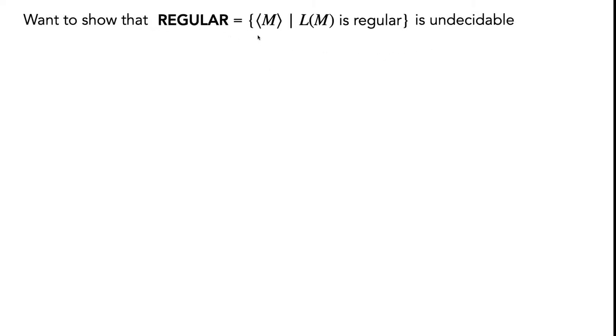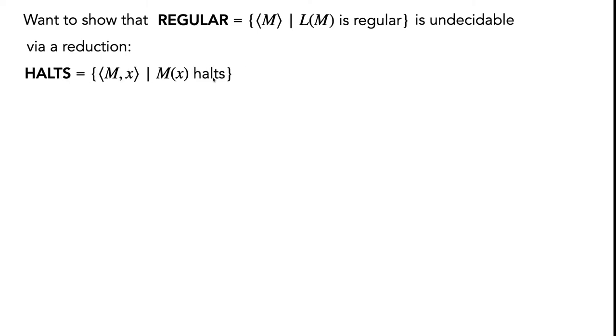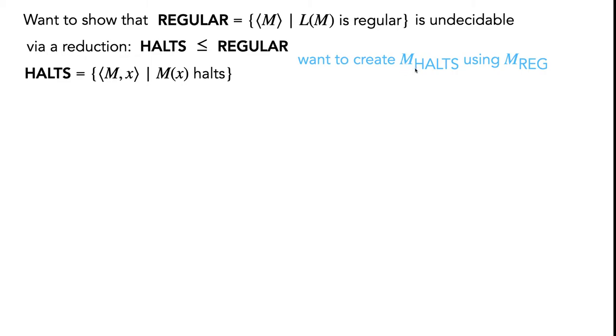The language REGULAR consists of encodings of Turing machines such that the language of that Turing machine is regular. We have to do this via reduction from a language we know to be undecidable to REGULAR. You have a few options from the notes for languages you're allowed to assume are undecidable. A good go-to is the language HALTS. Our reduction is going to show that HALTS reduces to REGULAR.